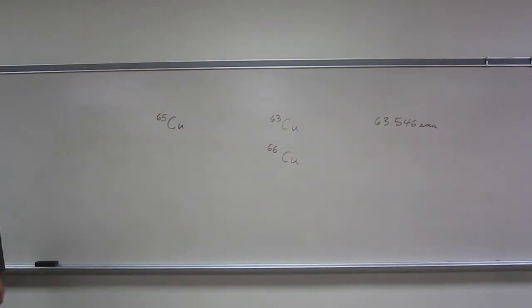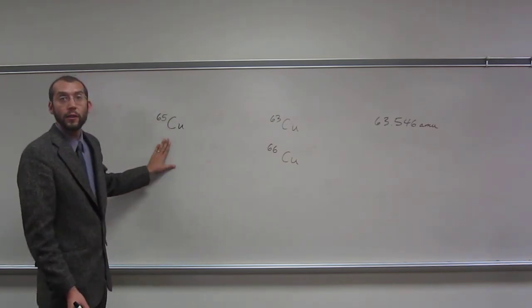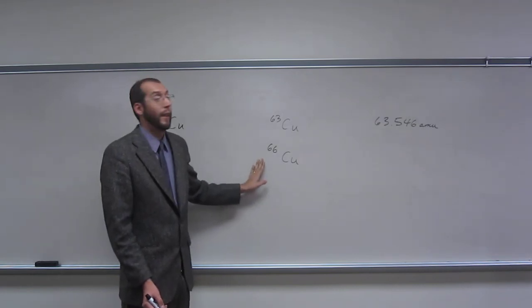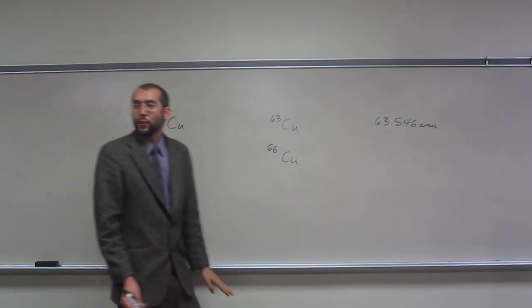Okay. So if it's saying that this one is 65, one of the isotopes is 65, right? And there's only one more isotope, and the average mass is 63.5, which isotope does it have to be?